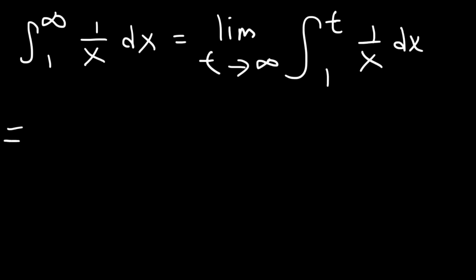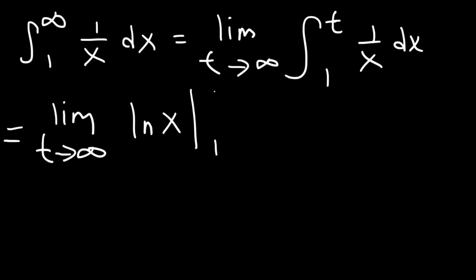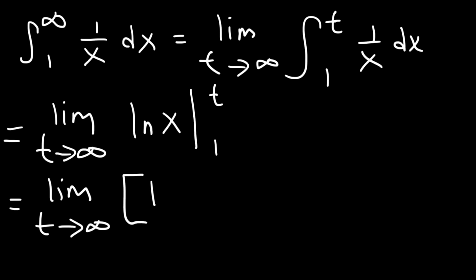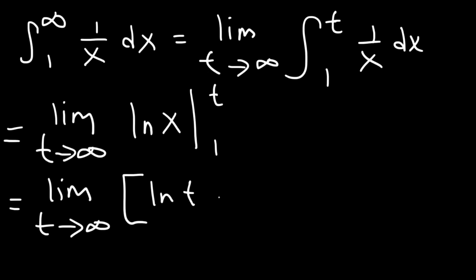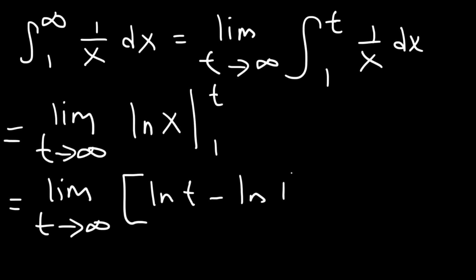Now, what is the antiderivative of 1 over x? We know it to be ln(x). We need to rewrite the limit expression: the limit as t approaches infinity of ln(x) evaluated from 1 to t. Based on the fundamental theorem of calculus, we replace x with t first, then replace x with 1.